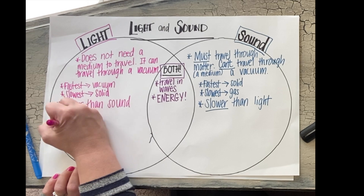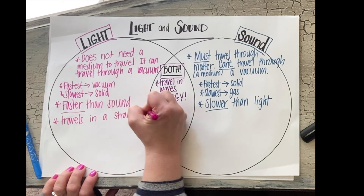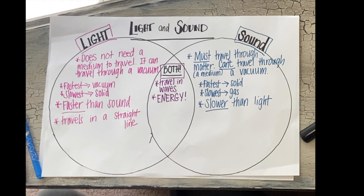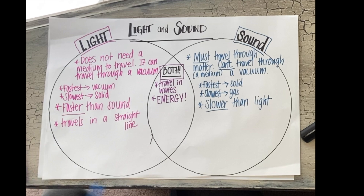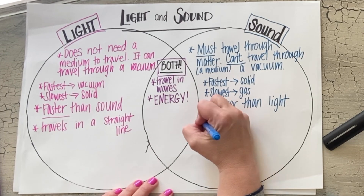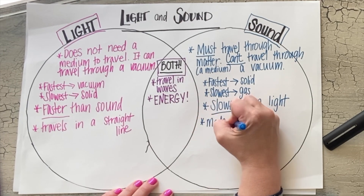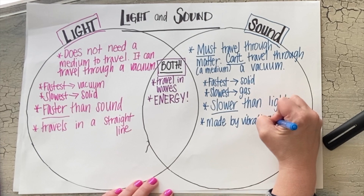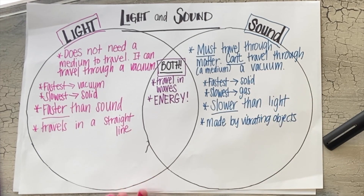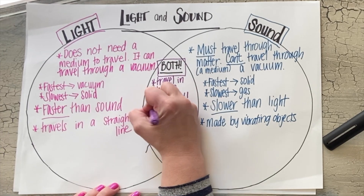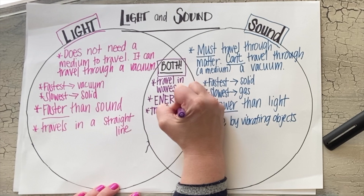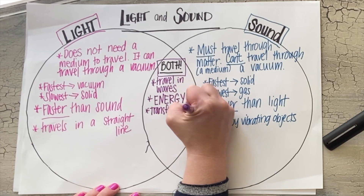I keep thinking about how light travels, so I'm going to add that to the light side — light travels in straight lines. I'm also thinking about how sound is produced; it's made by vibrating objects. So those two things are different for light and sound. I'm also going to add that both light and sound transfer energy.